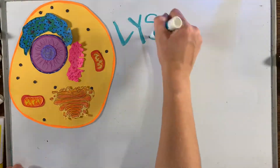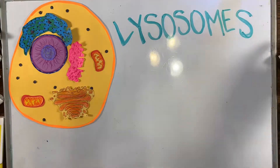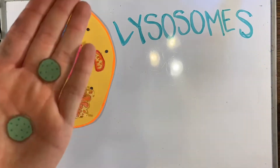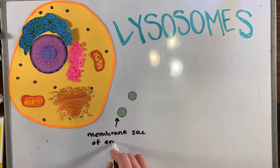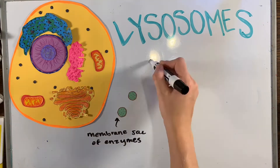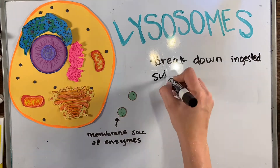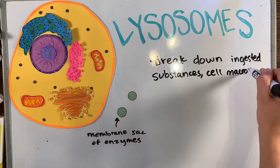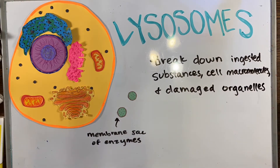The next organelles are the lysosomes. Lysosomes are membrane sacs of enzymes used to break down ingested substances, cell macromolecules, and damaged organelles. These are like the custodians who keep the factory clean and help recycle.